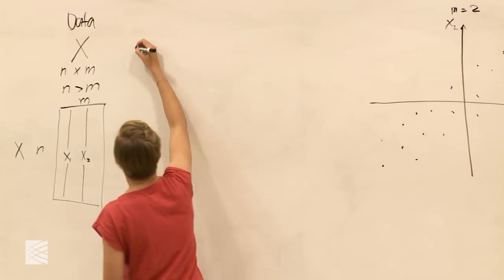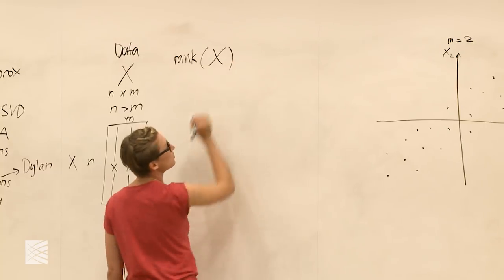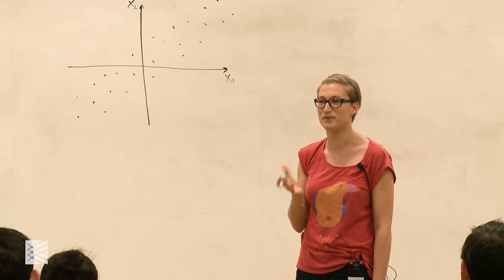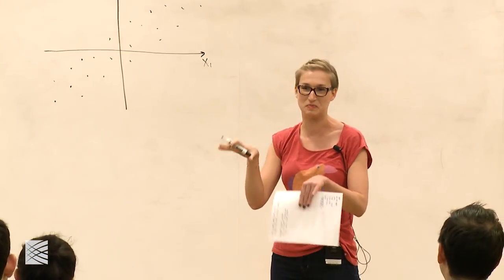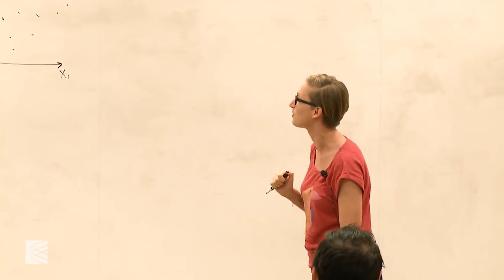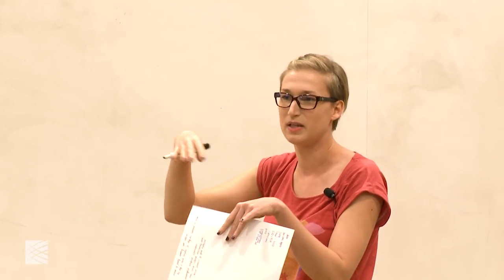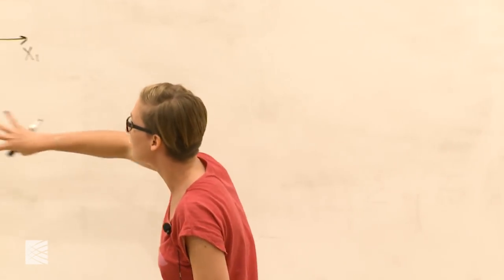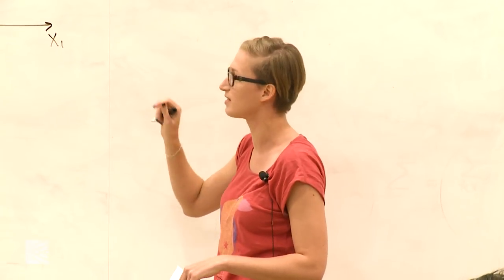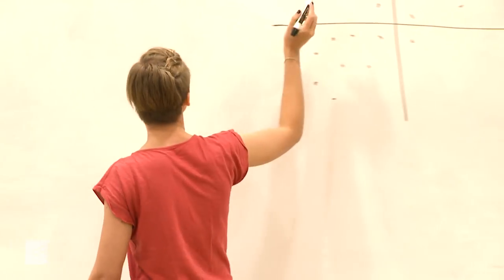Now, what is the rank of the data matrix? How do you think about rank? What's a more intuitive, geometric way? Does the data lie on a one-dimensional thing, a two-dimensional thing, or a higher-dimensional thing? What would you say? Looking at this data — it's not exactly flat, so the rank is two in this case, and in general the rank is at most M, the number of columns.